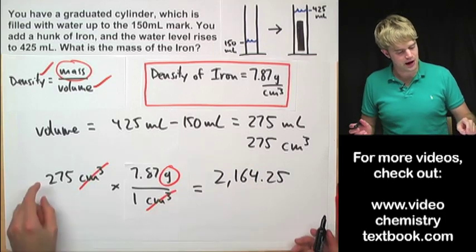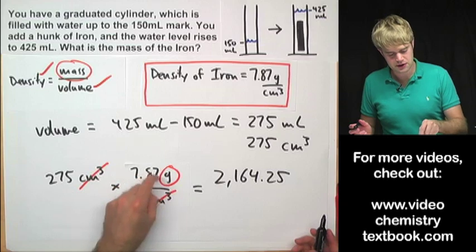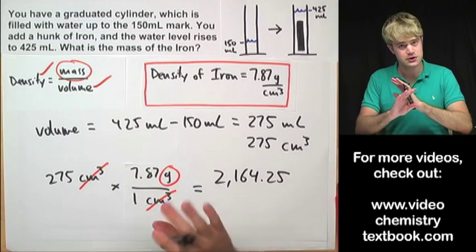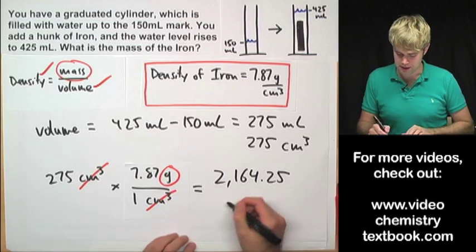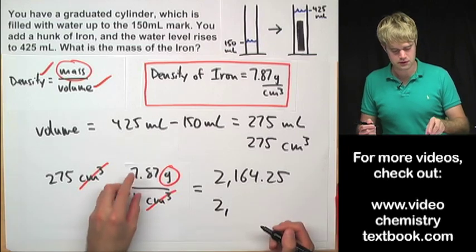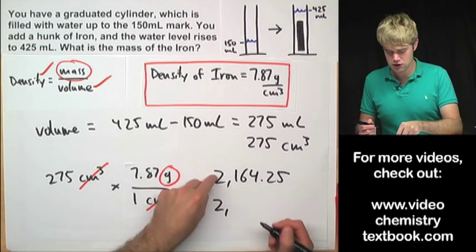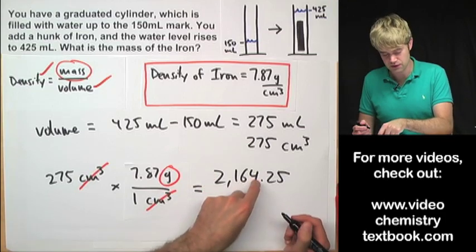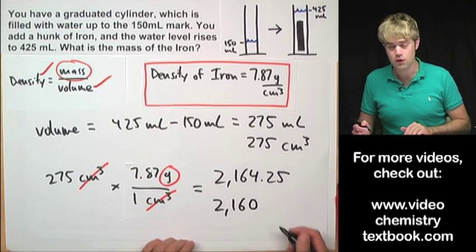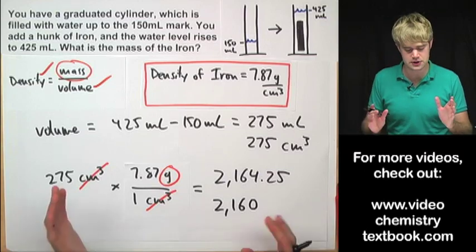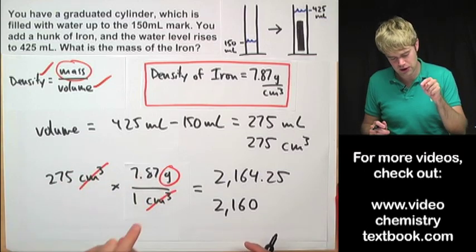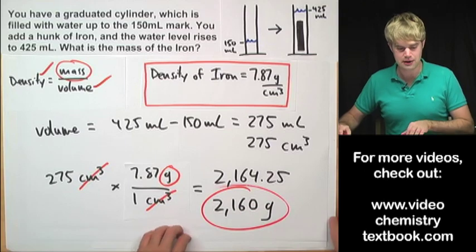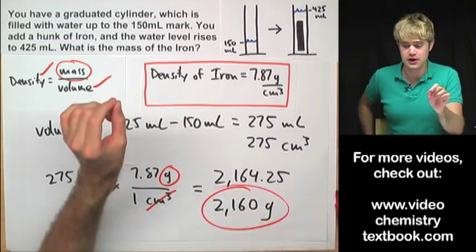What do I round this to? I've got 3 sig figs here, 3 sig figs here and the 1 is a counting number as part of the definition here so we don't worry about it. So I'm going to do 2,000, rounding it to 3 sig figs, 2,160. The 60 stays the same because there's a 4 here and then I replace the 4 with a 0. 2,160, what are the units here? I cancel out centimeters cubed so I'm left with grams. 2,160 grams is the mass of the iron.